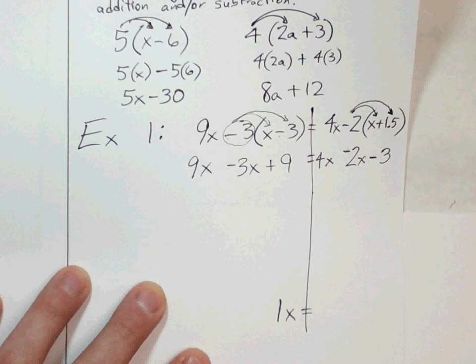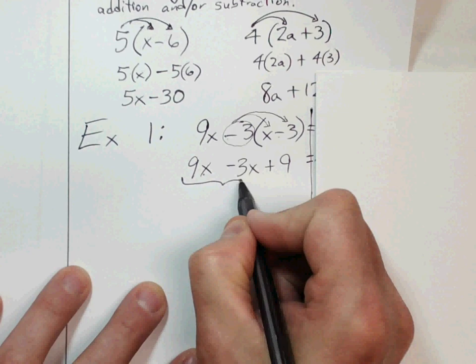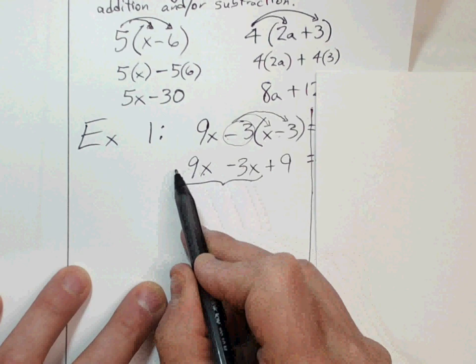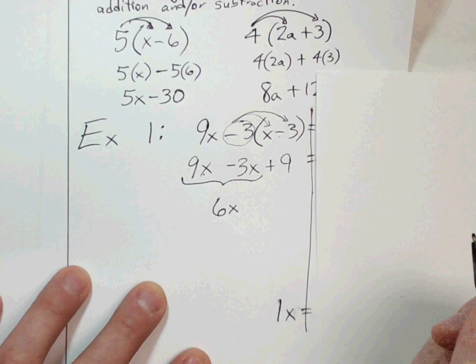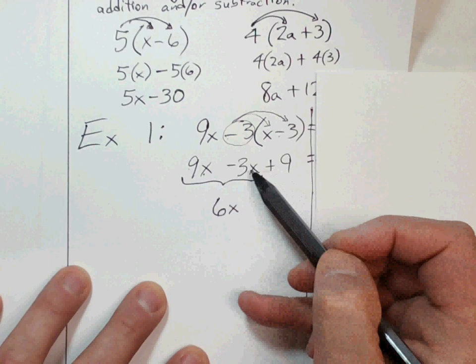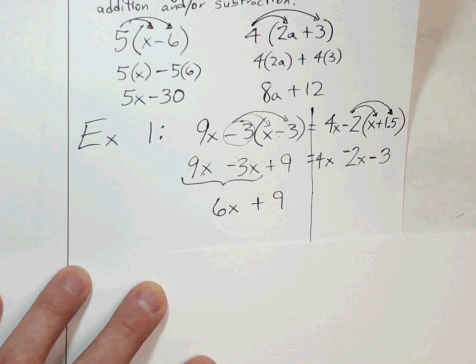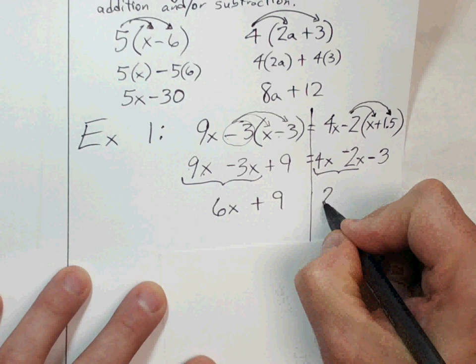Now we collect like terms on each side. On the left side, 9x and negative 3x are like terms — combining the coefficients gives 9 minus 3 equals 6, so we get 6x. The x stays as x; only the coefficients change when combining like terms. The plus 9 stays. On the right side, 4x minus 2x is 2x, and the negative 3 stays, giving 2x minus 3.